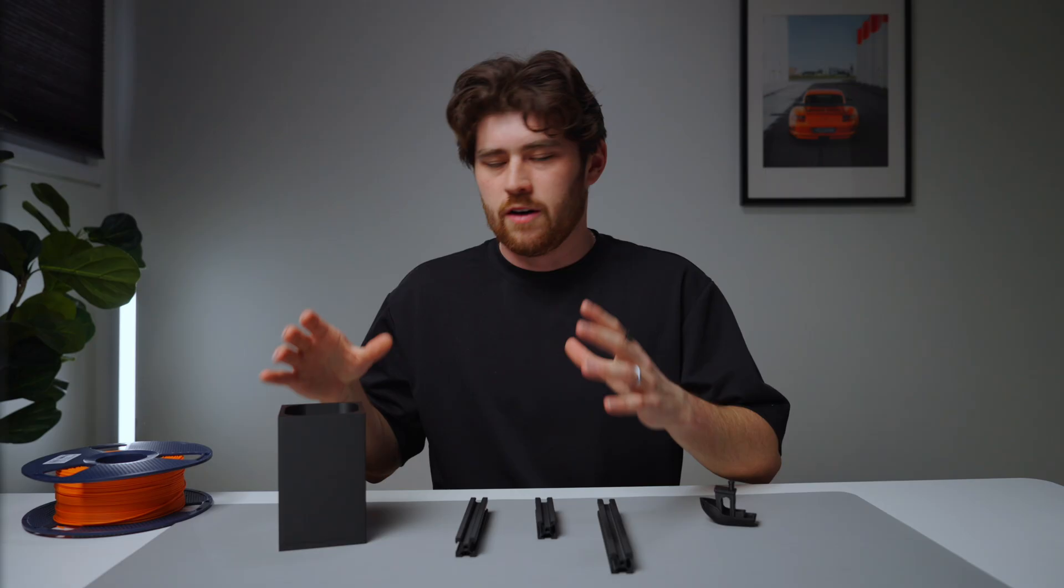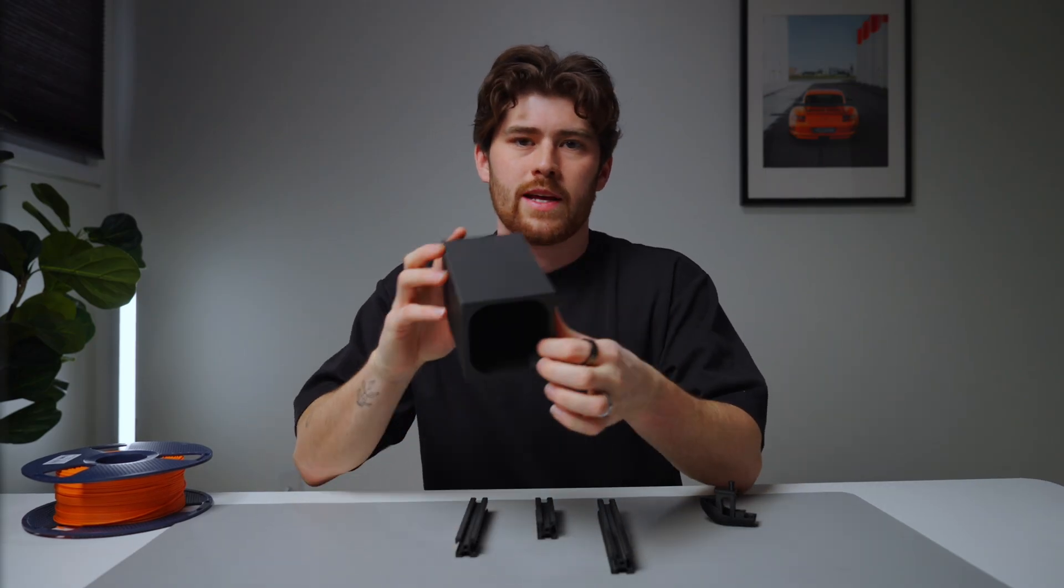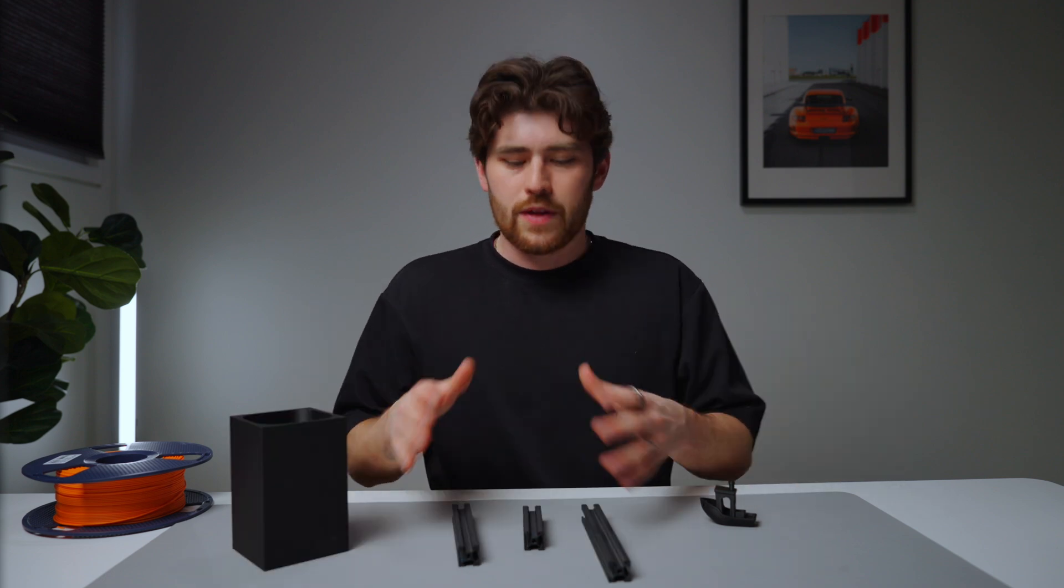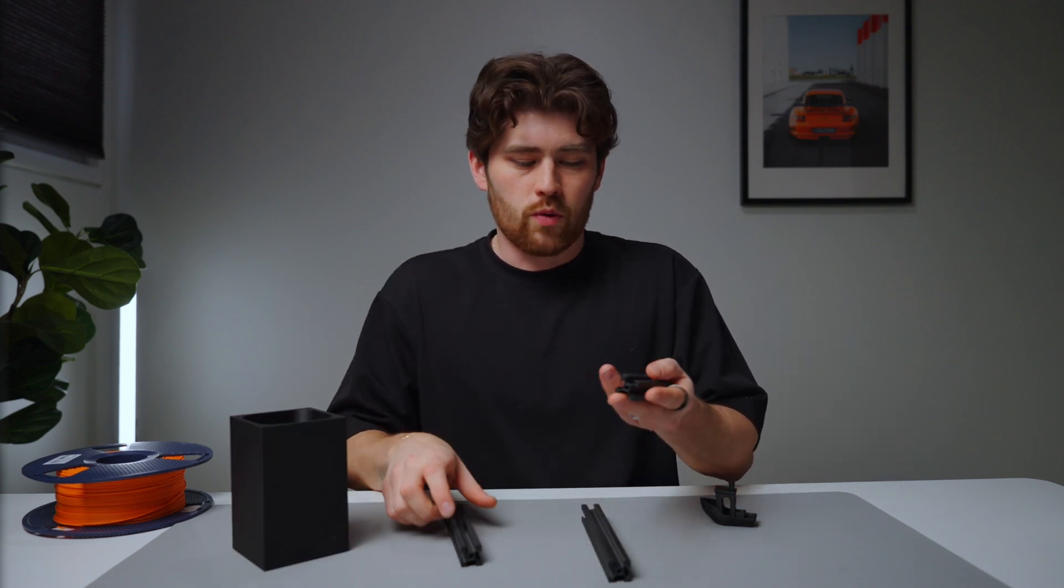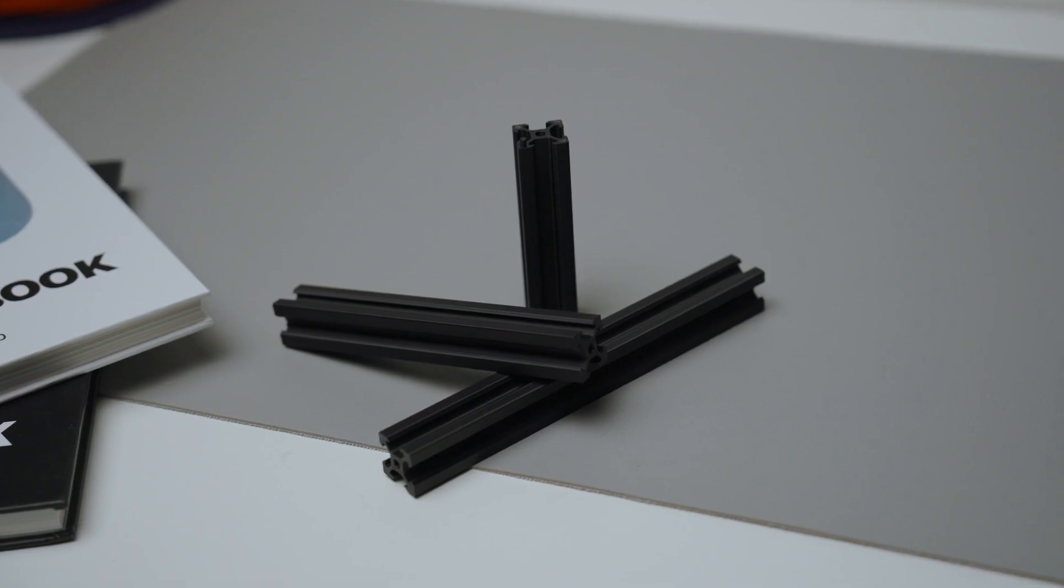So here in front of me, I just have a couple of the 3D prints that I've done recently. This is like a prototype for something in our coffee shop, basically like a syrup holder. These are some aluminum extruded rails that I made. Obviously not aluminum, but you know, you get the idea of what they're supposed to be.